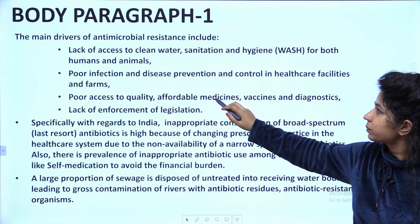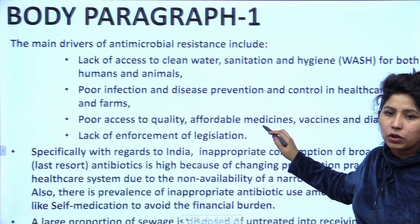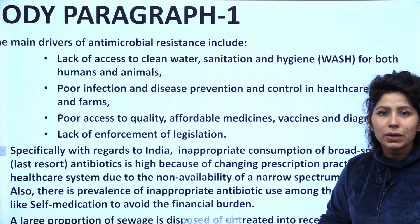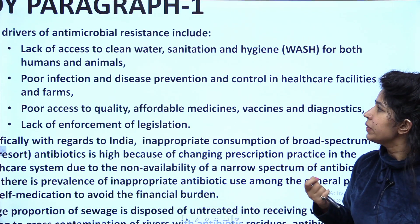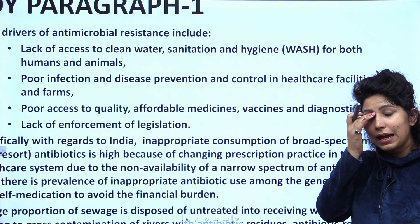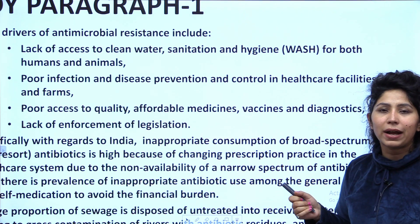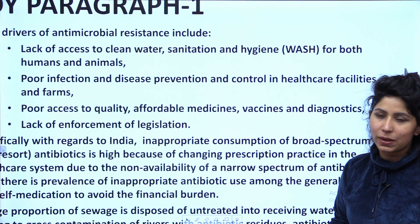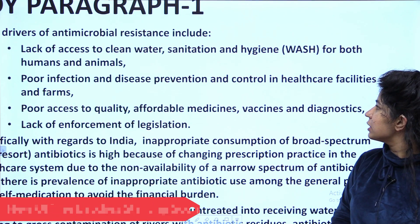A strong bacteria inside a horse, for example, could be transmitted to the owner through shared air. Third, poor access to quality, affordable medicines, vaccines, and diagnostics — right medicines are not available, and whatever is available may actually increase antimicrobial resistance. Fourth, lack of enforcement of legislation — some antibiotics or antimicrobial medicines that must be banned are not properly regulated.